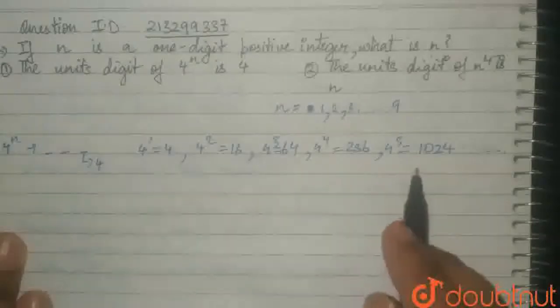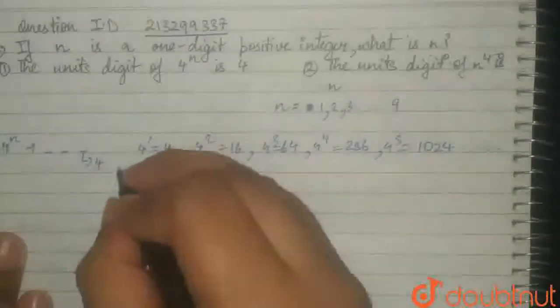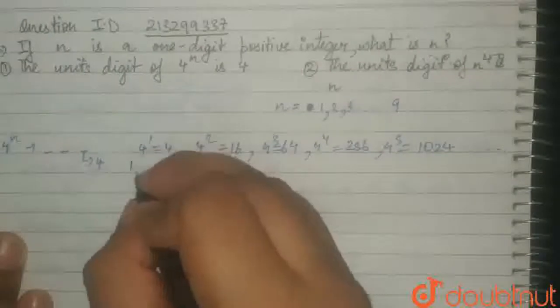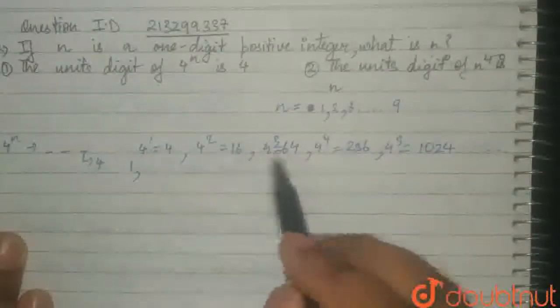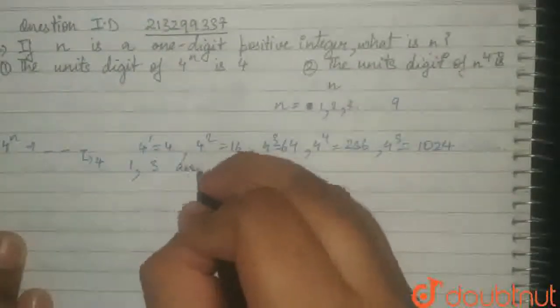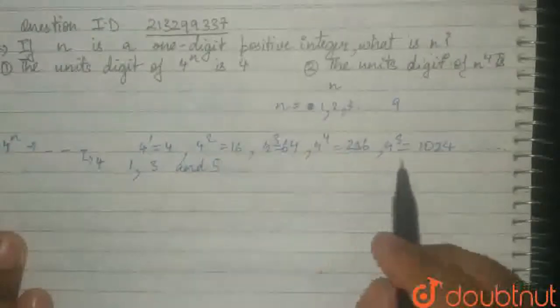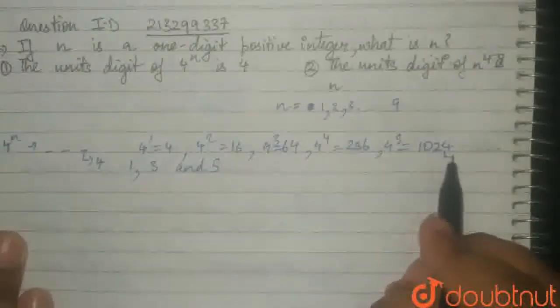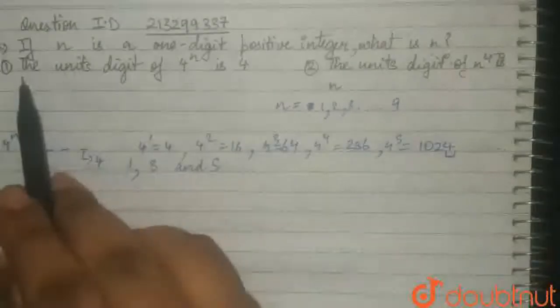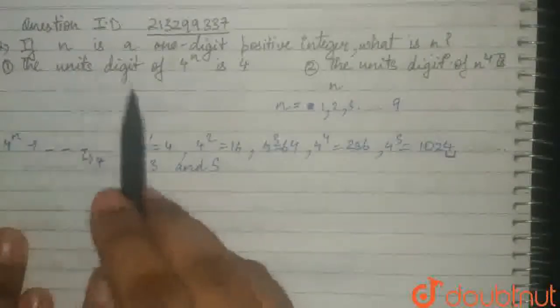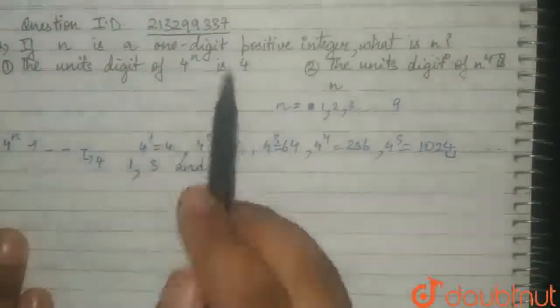We see a slight pattern emerging here. That is, for exponents 1, 3 and 5, the unit's place has a value of 4, like the first condition set, that the unit's digit of 4 raised to the power of n is 4.